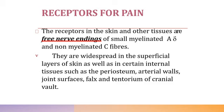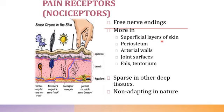The receptors for pain are called nociceptors. These are the free nerve endings of small myelinated A-delta and non-myelinated C-fibers, present in the skin and other tissues. They are widely spread in the superficial layers of the skin and are also found in the periosteum, arterial walls, joint surfaces, pharynx, and tentorium of the cranial wall. They are sparse in other deep tissues and are non-adapting in nature — meaning they do not adapt to ongoing stimuli.